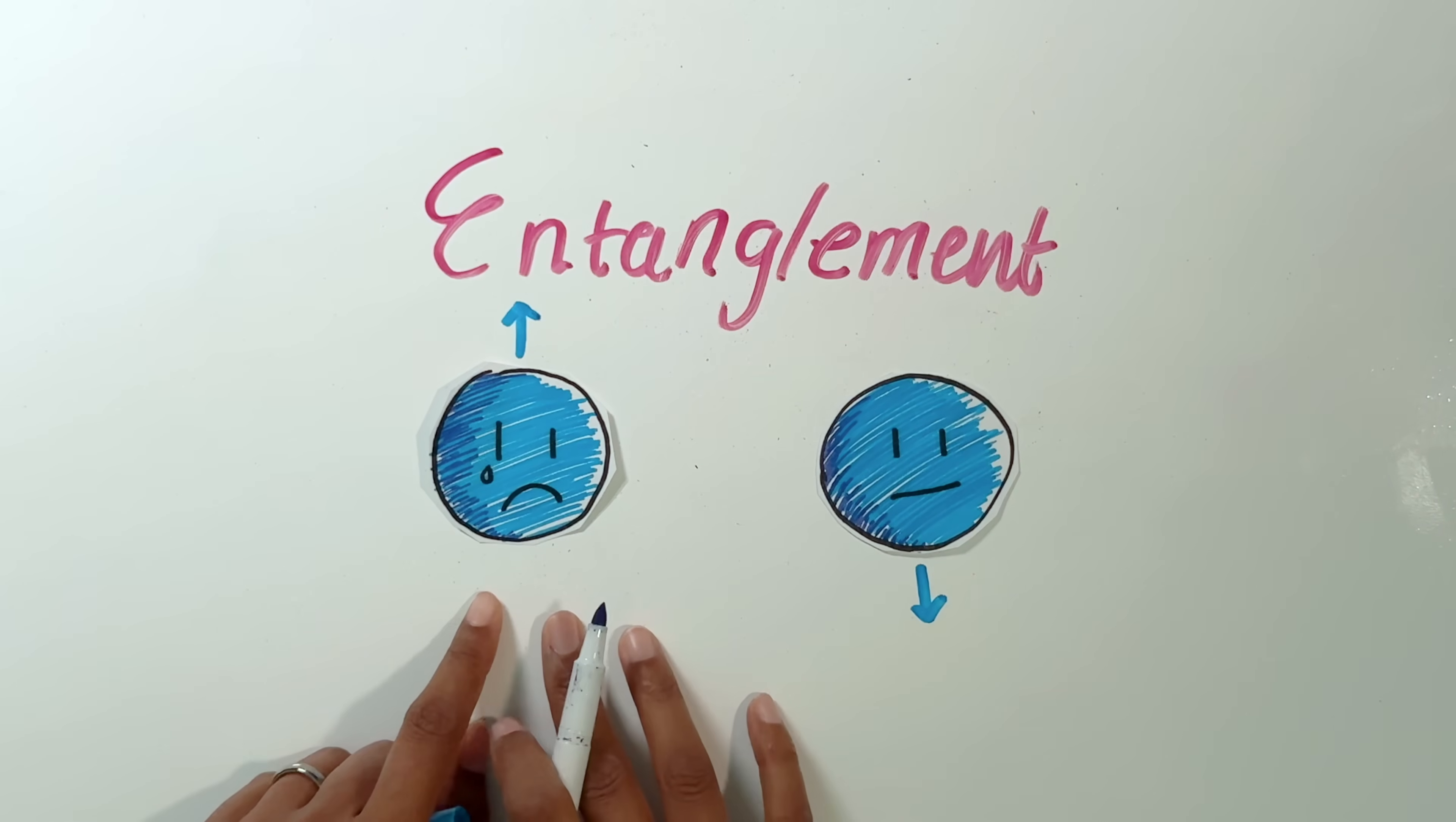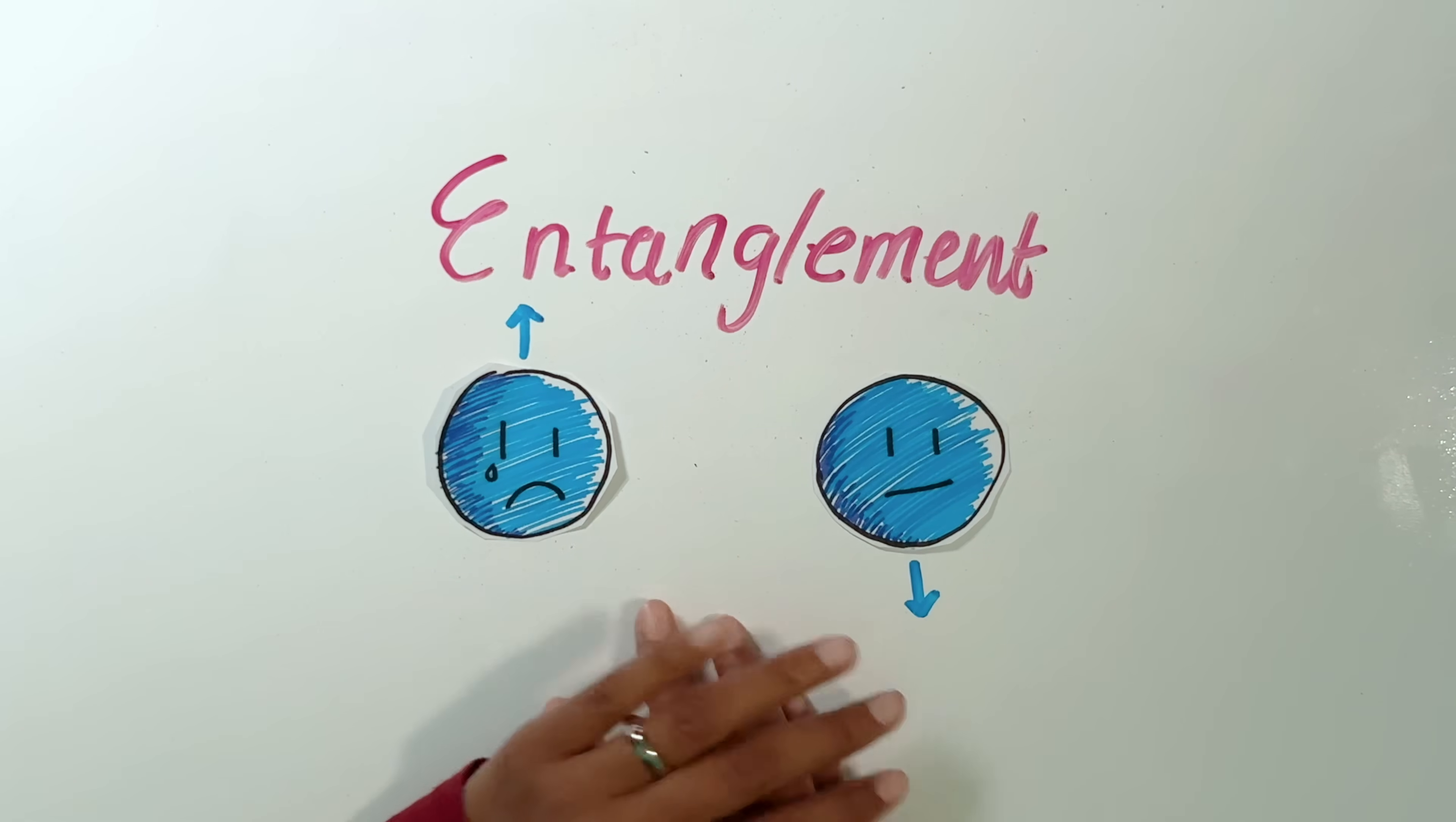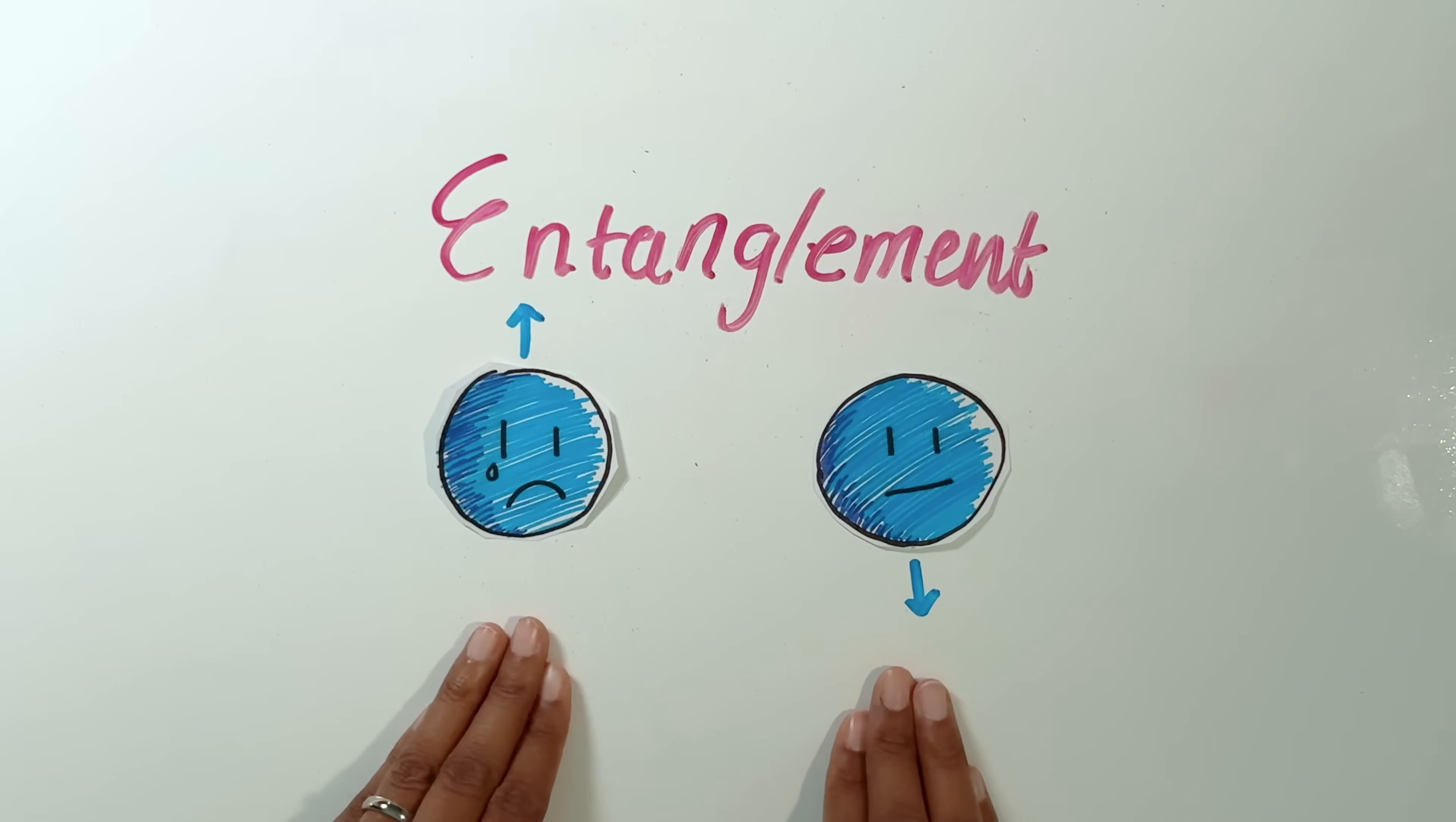So I can just tell you that the state of this electron is up without having to say anything about this electron. On the other hand, imagine I have these two coins instead, and one of them is heads and the other one is going to be tails. But I'm not going to show you what happens. I'm going to spin them around a little bit. And now I'm going to separate them.